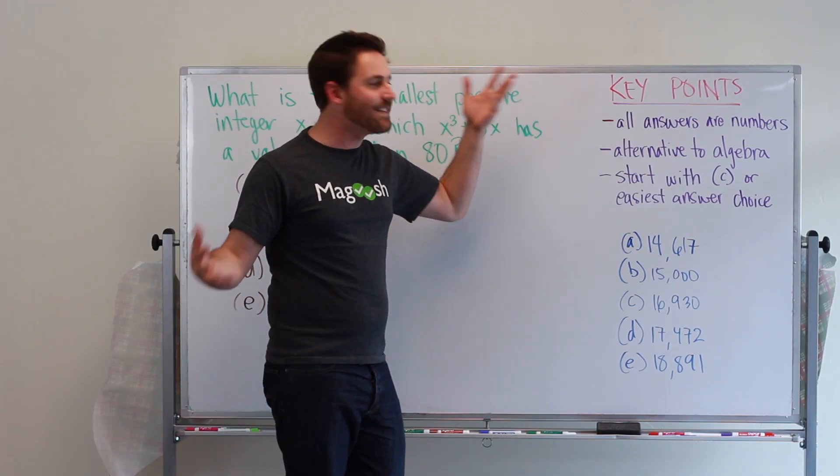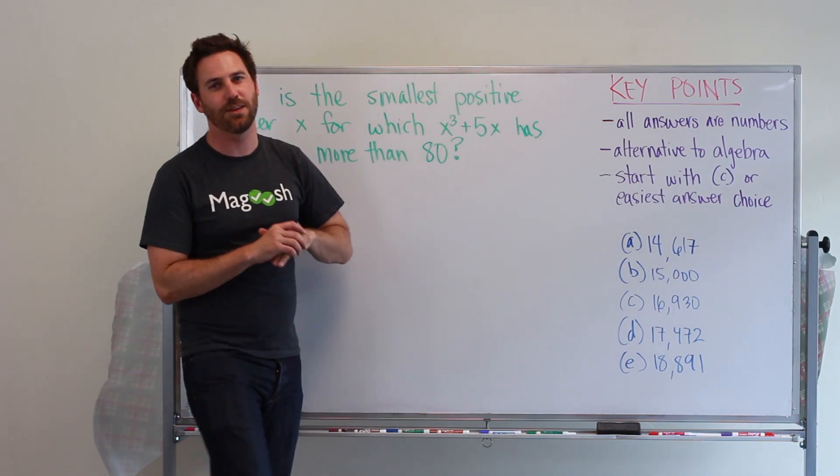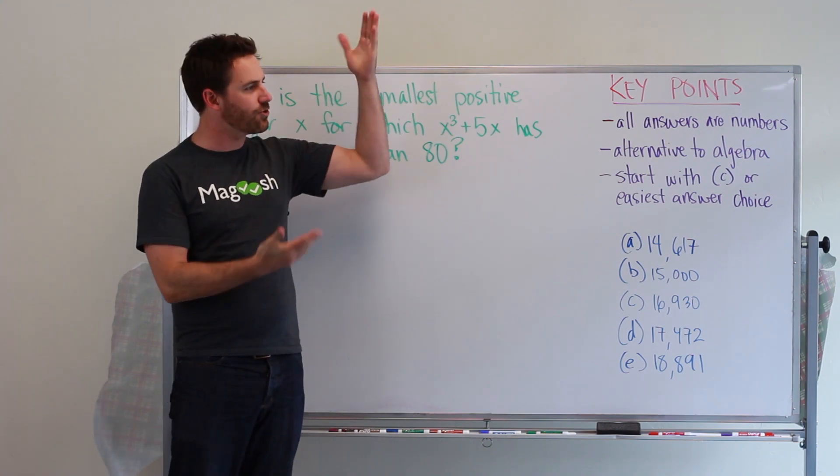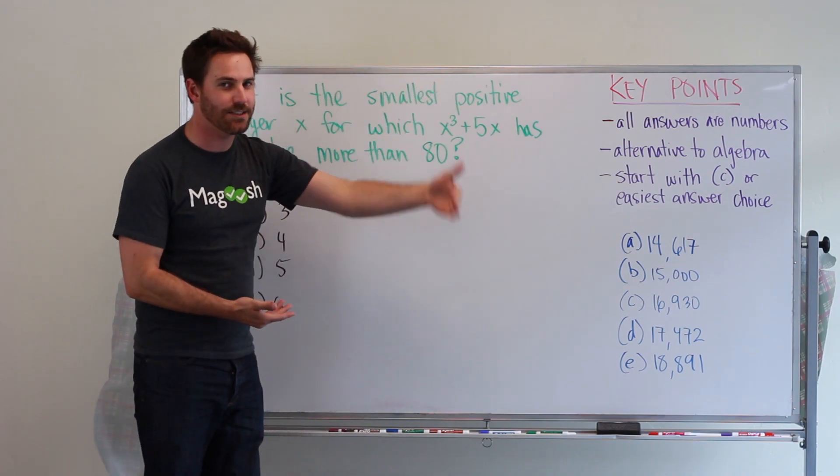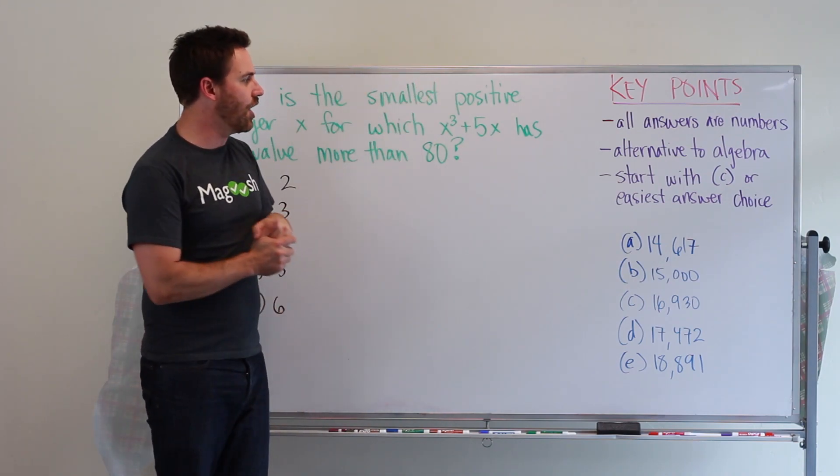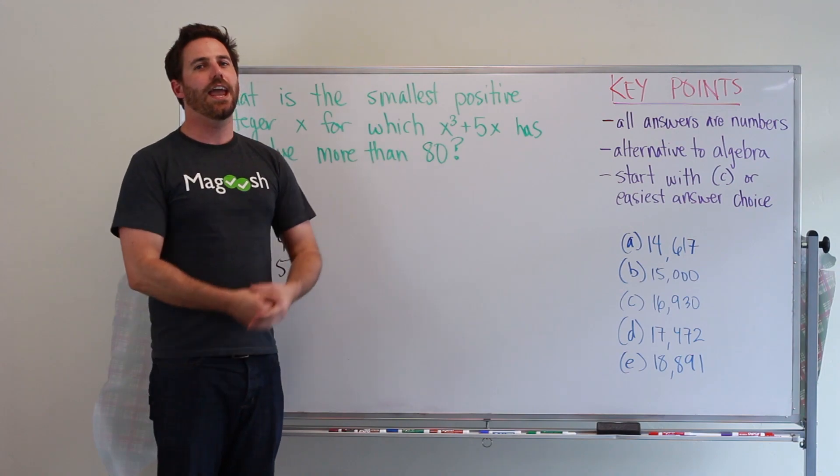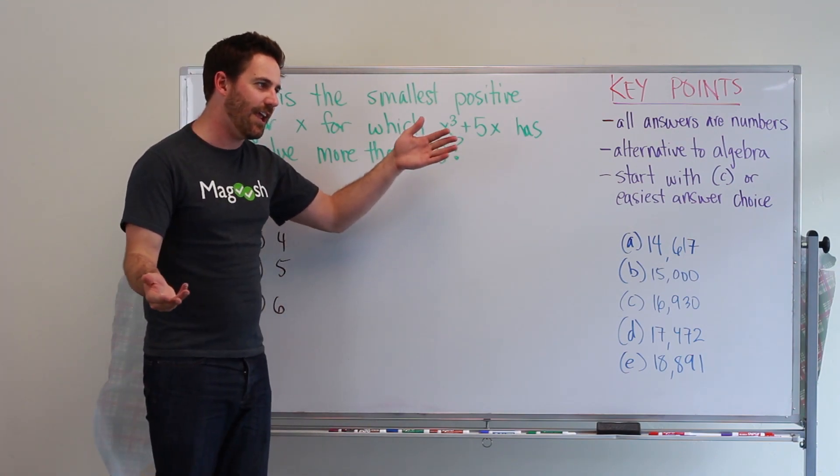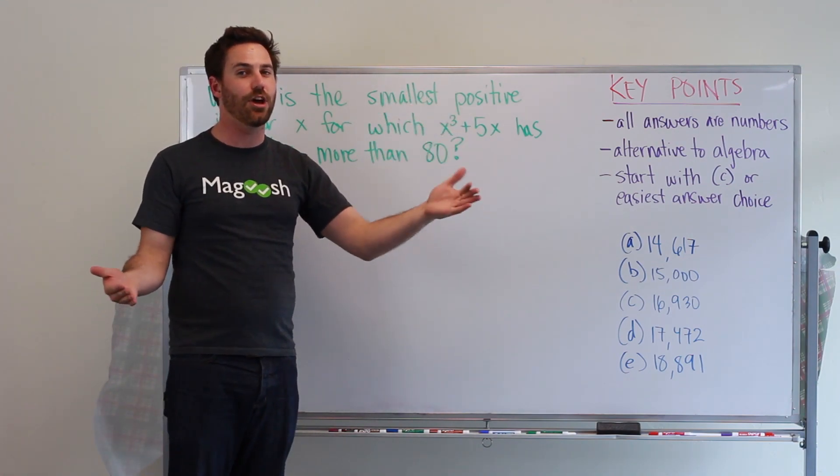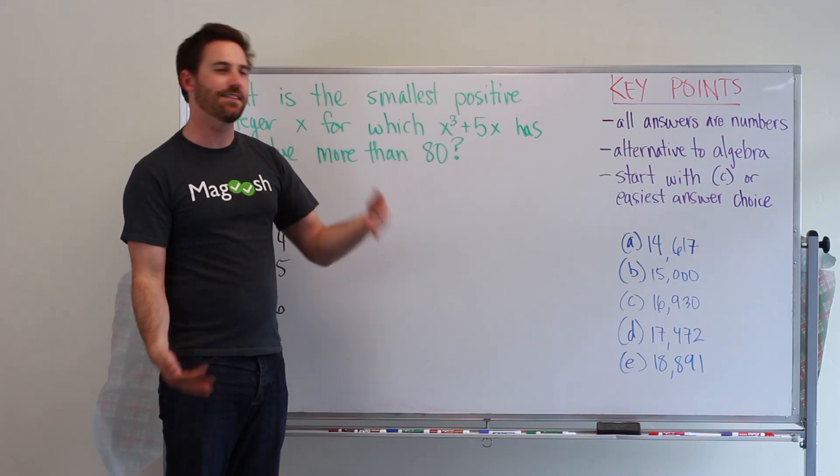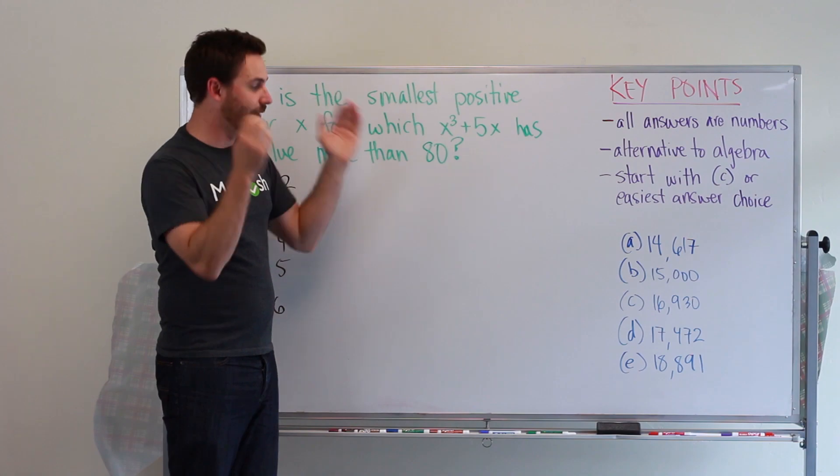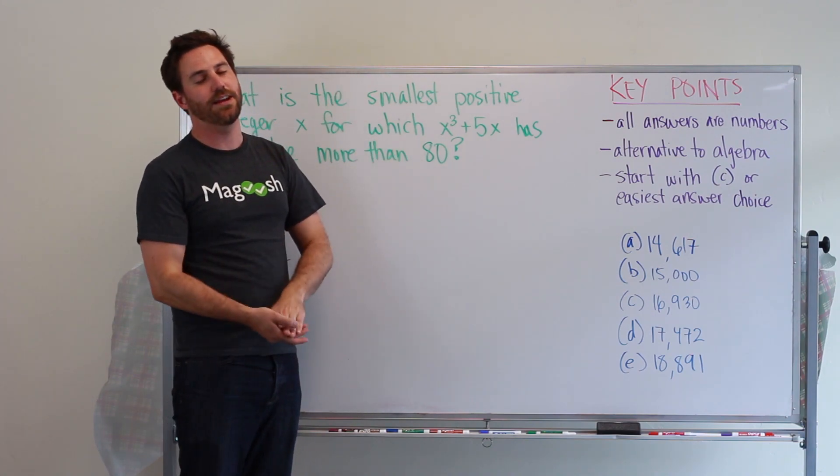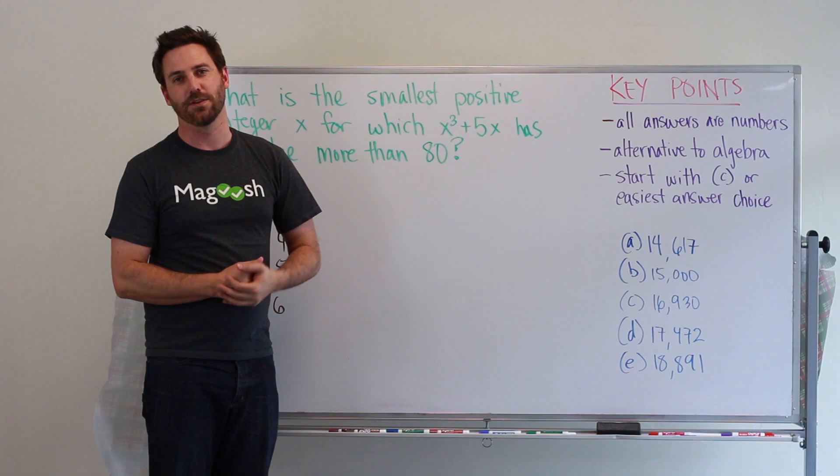And start with C. C is the best answer to start with because when you have answer choices that are listed on the GMAT, it's going to be from smallest to largest. So if you start with C and you use C, then if it doesn't work, if it's too big, then you can eliminate C, D, and E and start with B or A. And if it's too small, then you can eliminate C, B, and A, and then you have two answer choices to work with.